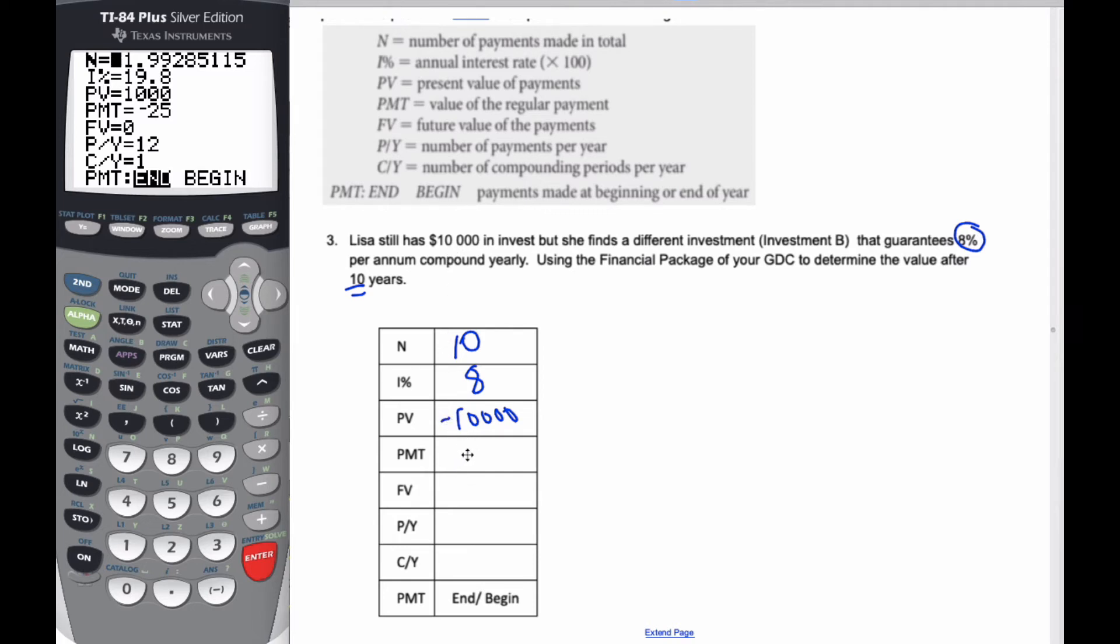There are payments. In this case, there's no monthly payments. I'm not adding more money. So that one is 0. That's my regular payment. They don't exist. And I am looking for the future value. So this is the one I'm looking for.